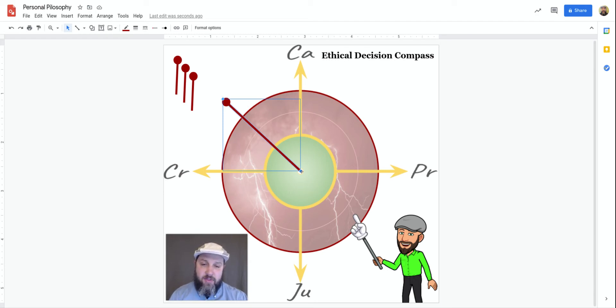So you would have a line going from the center, going all the way out to there. If it's closer to critique, then you're very judgmental of the situation. If you're not really critiquing, but you do care a lot, you might put the line closer to care.